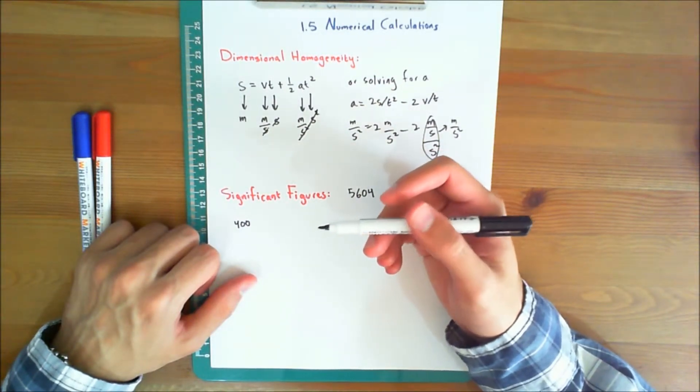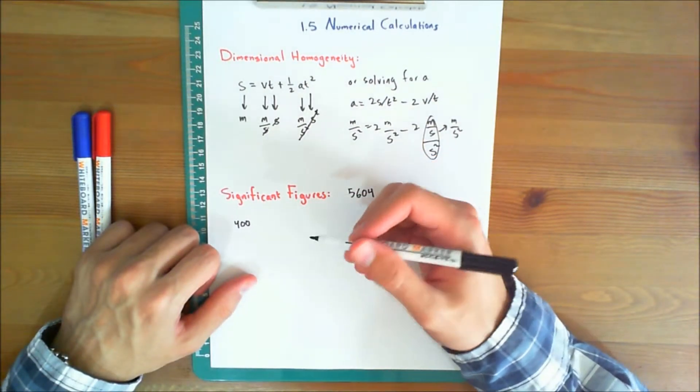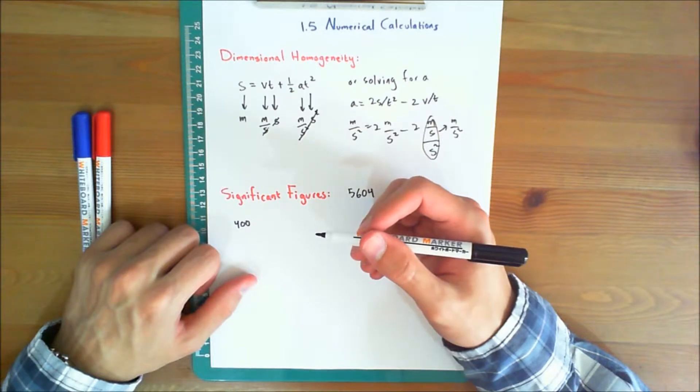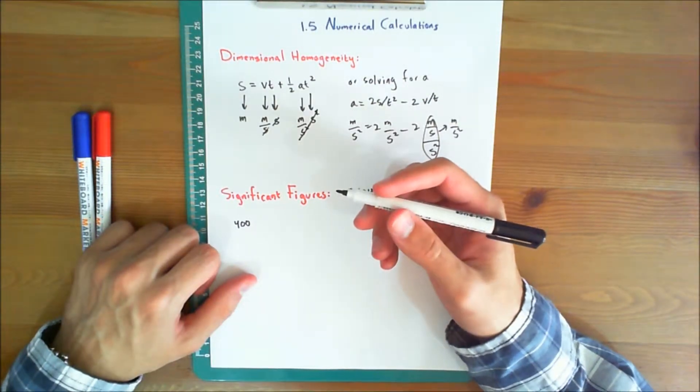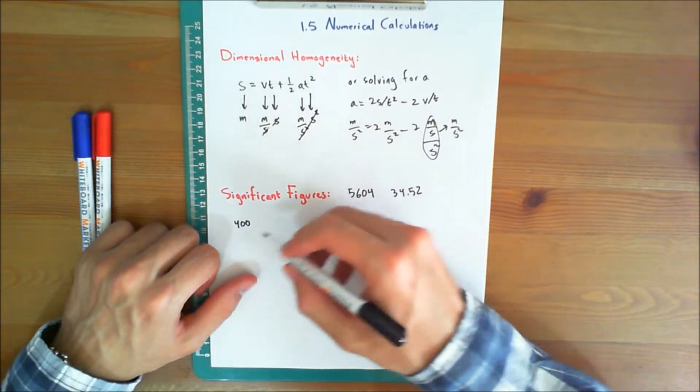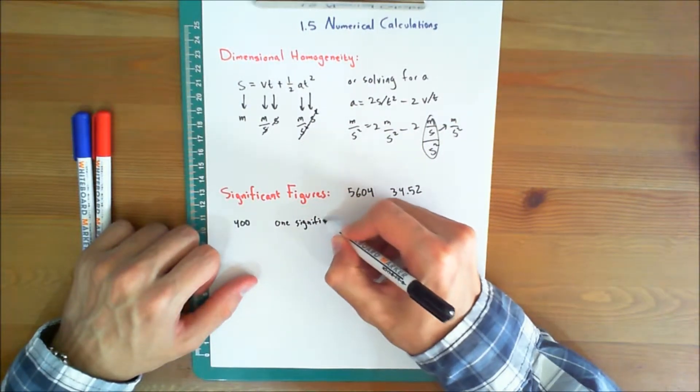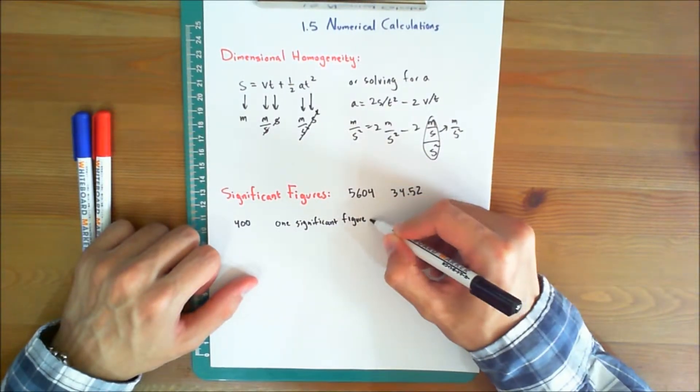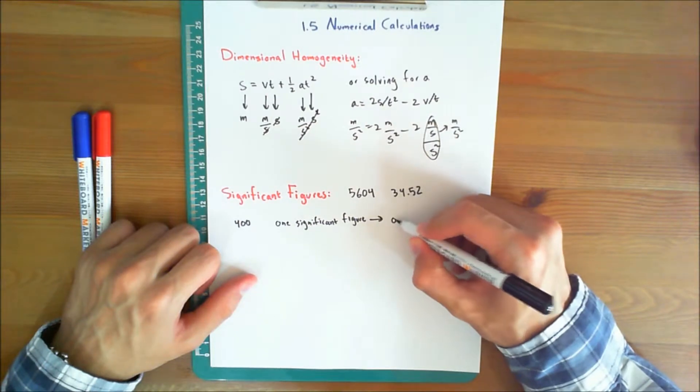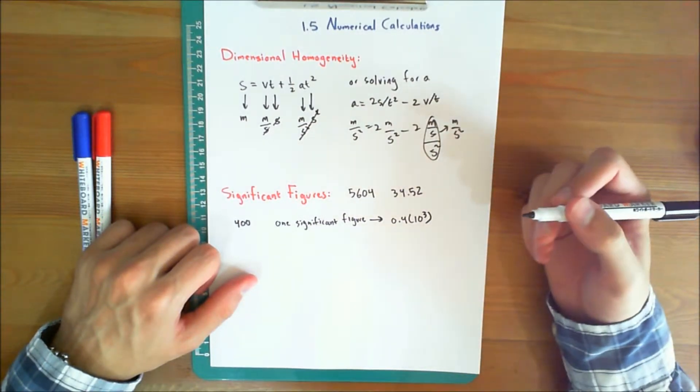the exponent is displayed in multiples of 3 in order to facilitate conversion of SI units of those having an appropriate prefix. Thus, 400 expressed to 1 significant figure would be 0.4 times 10 to the power of 3.